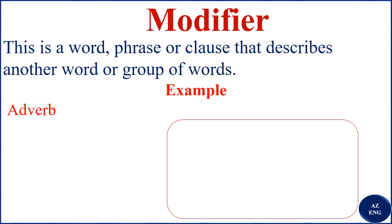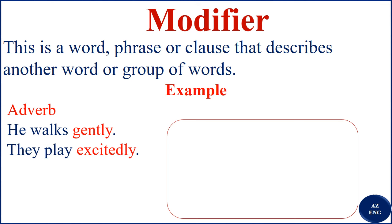Now we have adverbs as modifiers. A modifier can be a noun, an adjective, or an adverb. For example, 'he walks gently' — 'gently' gives us information on how he walks, so it modifies the word 'walks.' 'Gently' is an adverb, and it is the modifier here. 'They play excitedly' — 'excitedly' is an adverb; it modifies the word 'play,' so it is a modifier.